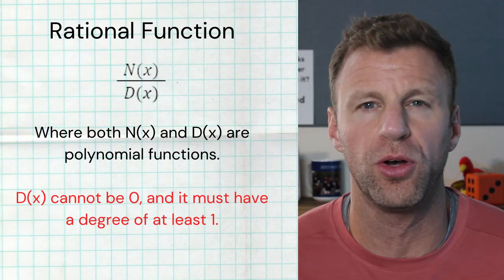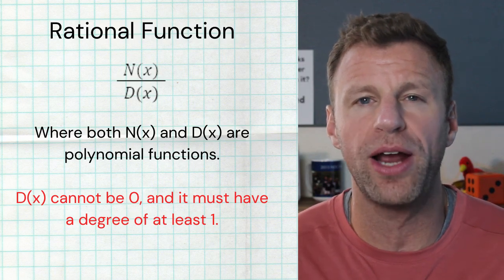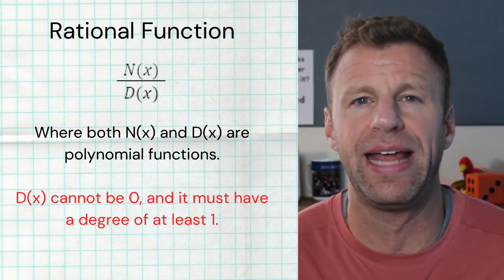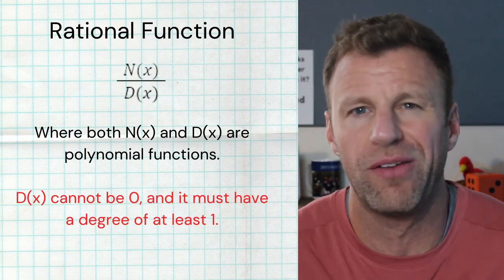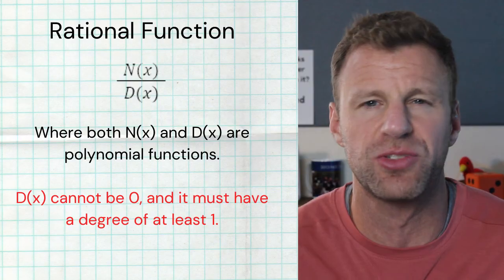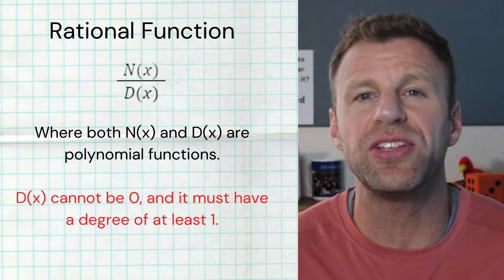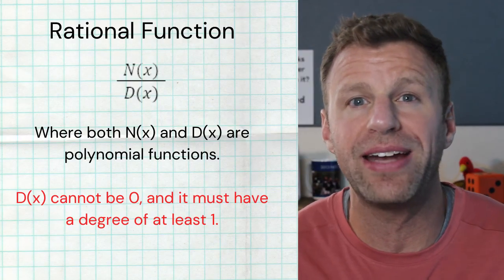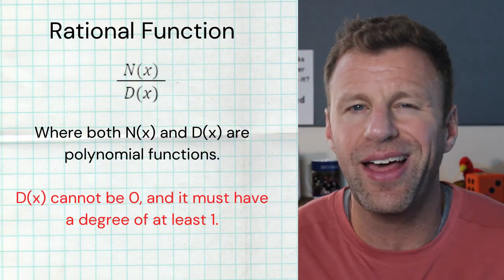First, what is a rational function? A rational function is a function that can be expressed as a polynomial divided by another polynomial. So we have a function in the numerator — I'm calling it n of x, we can call it f of x, g of x, h of x, doesn't really matter — and in the denominator we have another polynomial, d of x.